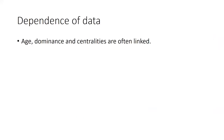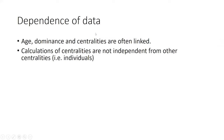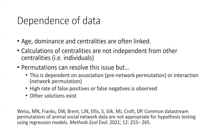An important consideration in SNA is that data are dependent and not independent. Age, dominance, and centrality are often linked — dominant individuals tend to be old and central — but you don't know exactly the causality of these effects. Moreover, centrality calculations are not independent from other individuals' centrality; they are relative, so changing one individual's centrality will change another's. To solve this, you have to use permutations: pre-network permutations for association data, and network permutations for interaction data.